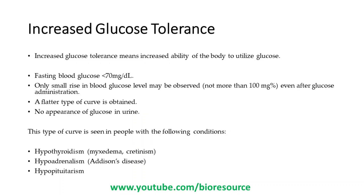Increased glucose tolerance means the increased ability of the body to utilize glucose. The fasting blood glucose will be much lower than normal levels, less than 70 mg per deciliter, and only a small rise in blood glucose may be observed, not even crossing the 100 mg per deciliter mark, even after administration of glucose. A flatter type of curve is obtained and glucose will not appear in the urine. This type of curve is seen in people with hypothyroidism, hypoadrenalism, and hypopituitarism.